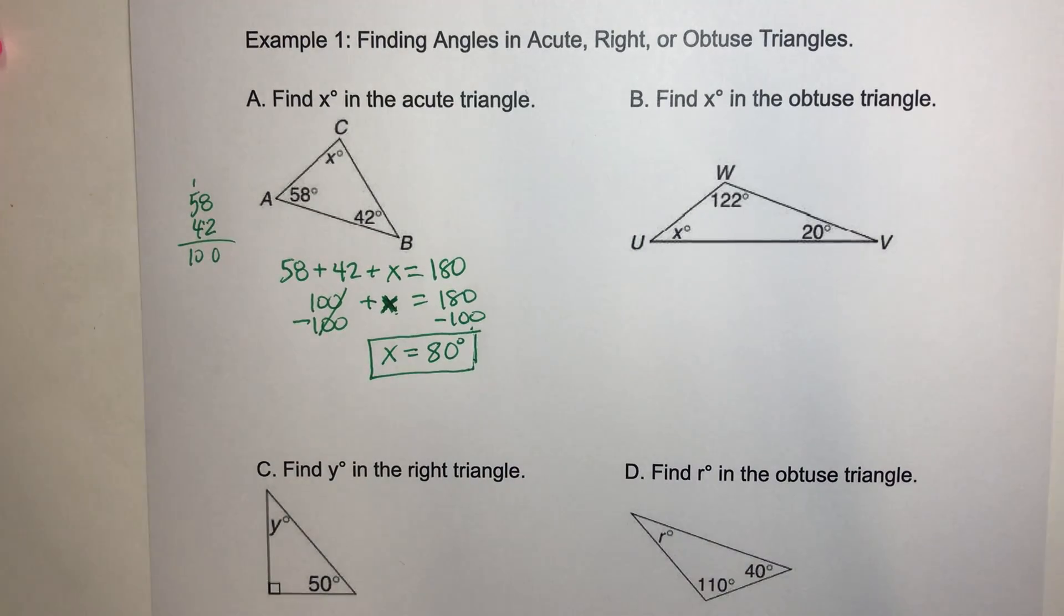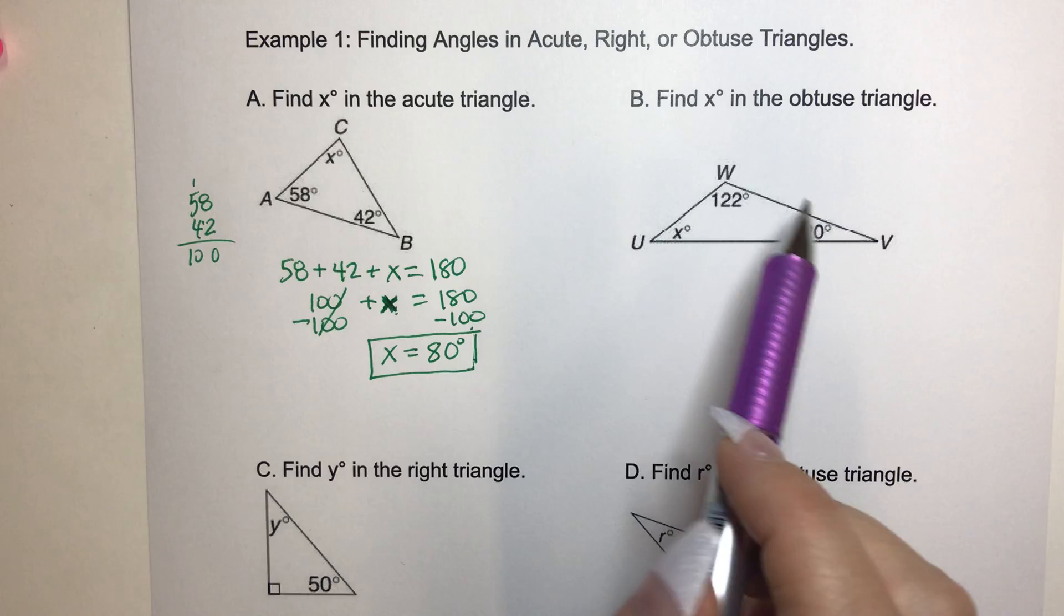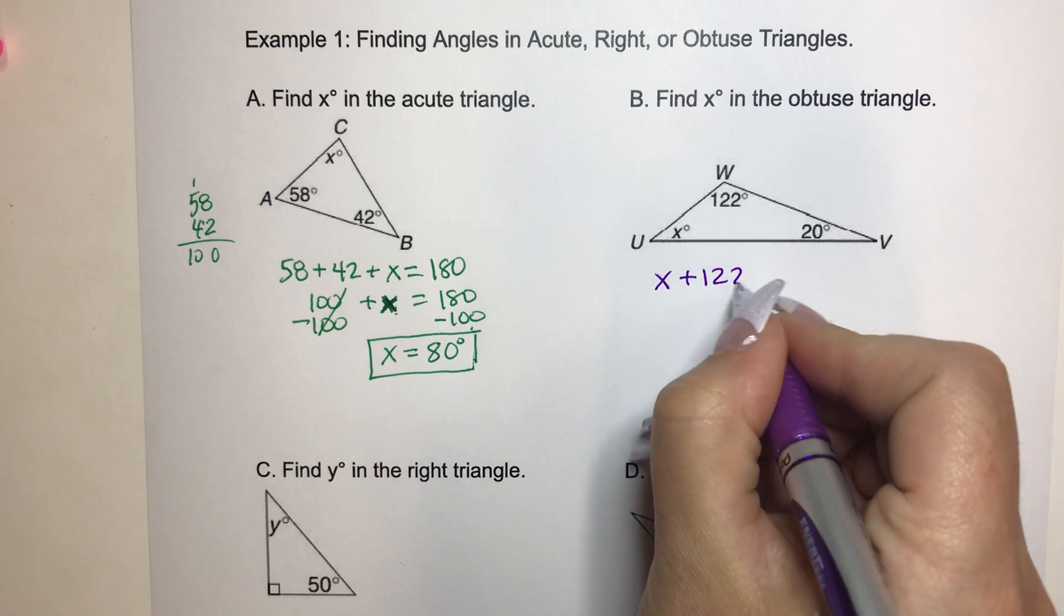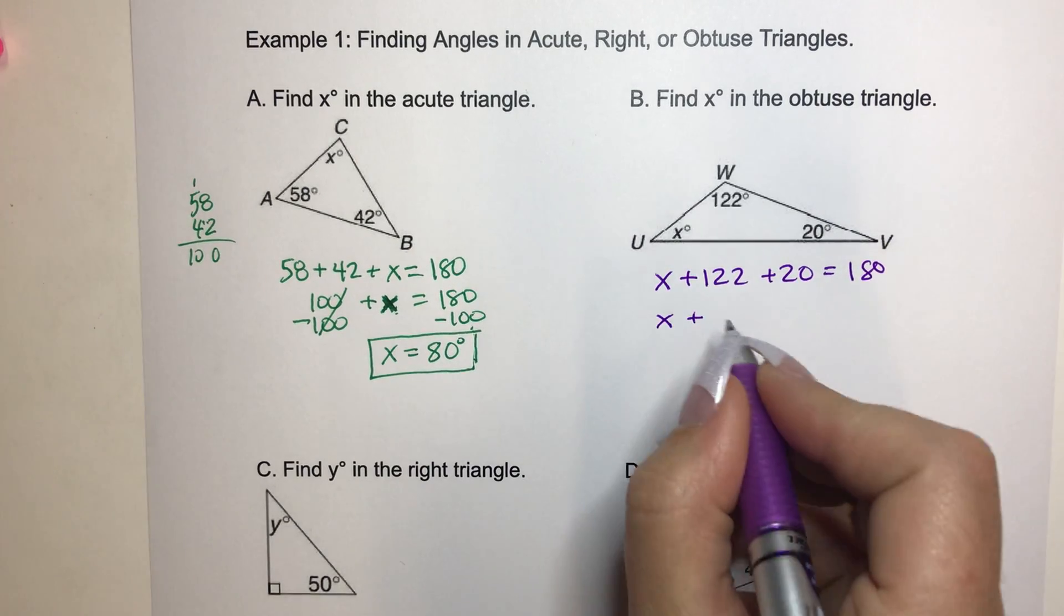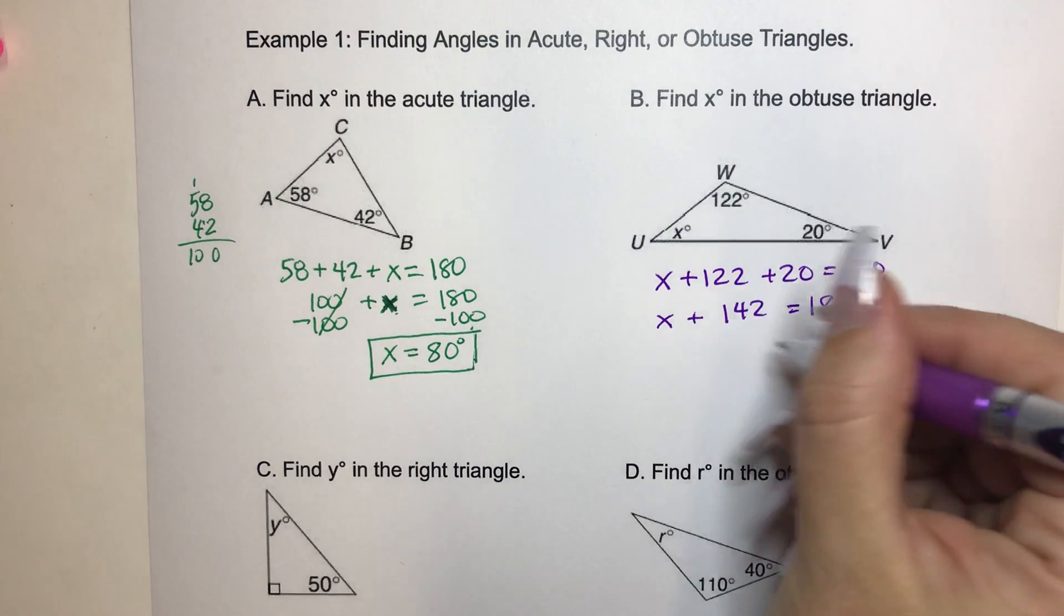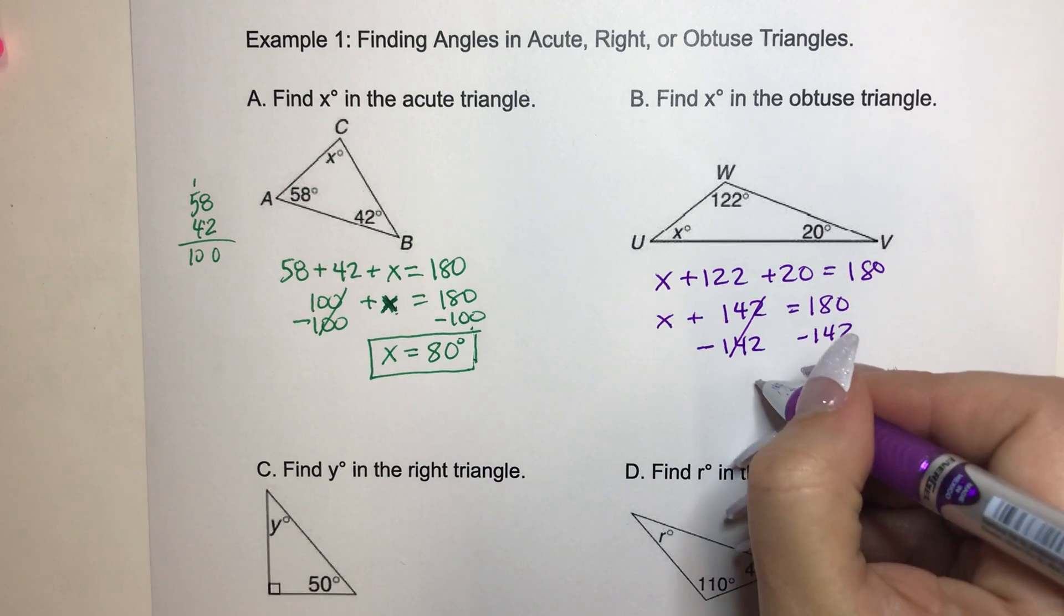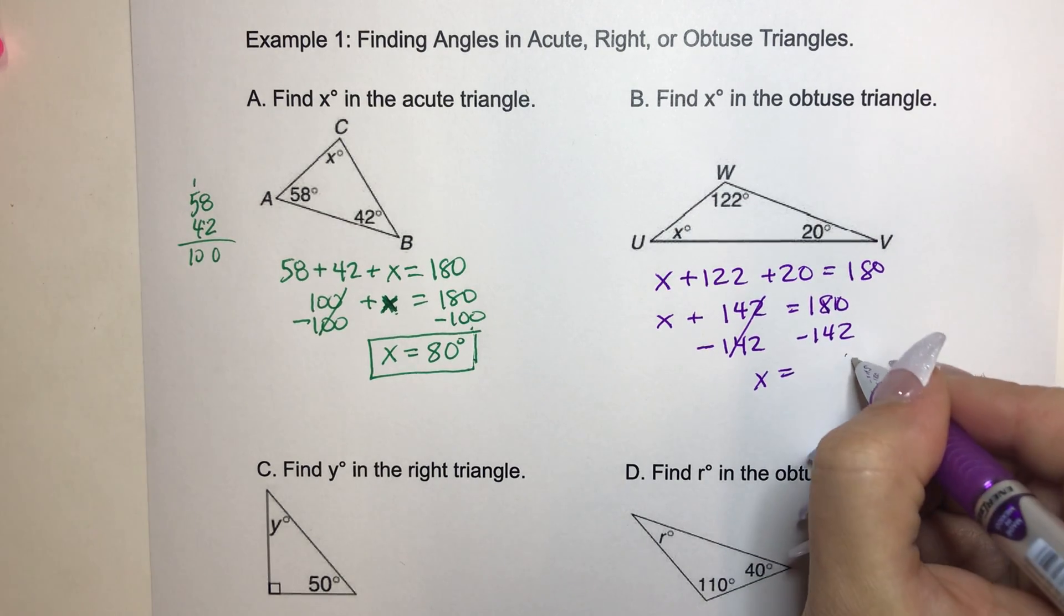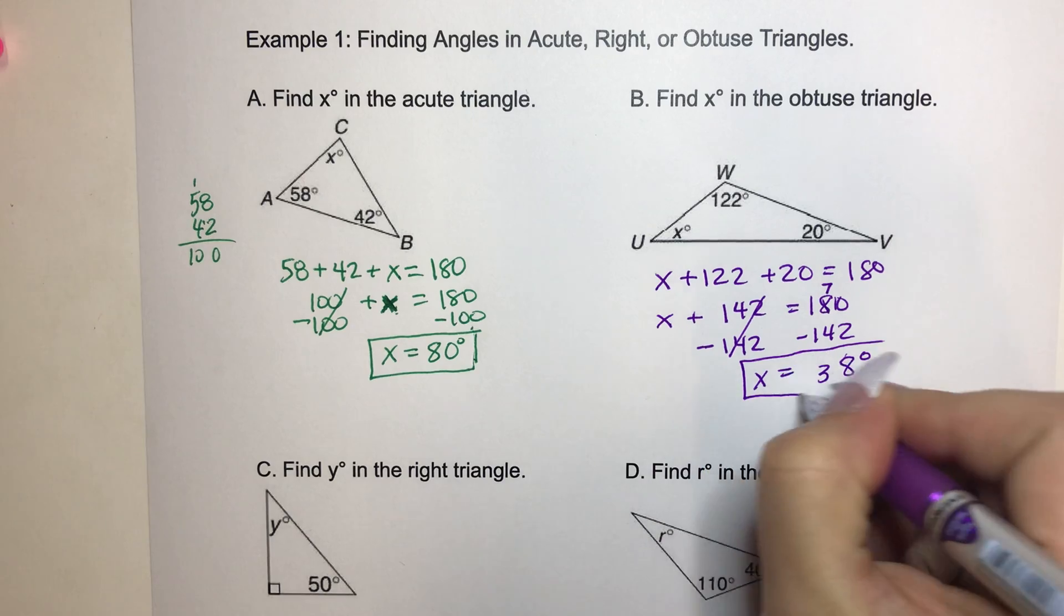Let's go on to the next one. Find X in the obtuse triangle. Notice we have an obtuse angle here, which makes this a lovely obtuse triangle. So we just add up all the angle measures. So we have X plus 122 plus 20 equals 180. We add up these numbers, we get X plus 142 equals 180. And then we've got to get X by itself, so we do the subtraction property of equality. And then we subtract 142 to both sides. That cancels. We're left with, I have to borrow. Eight, that is seven, three, 38 degrees. And there we have it.